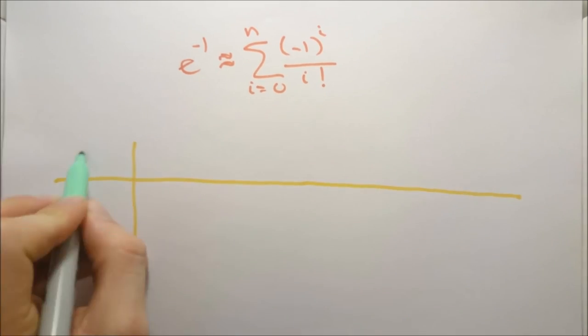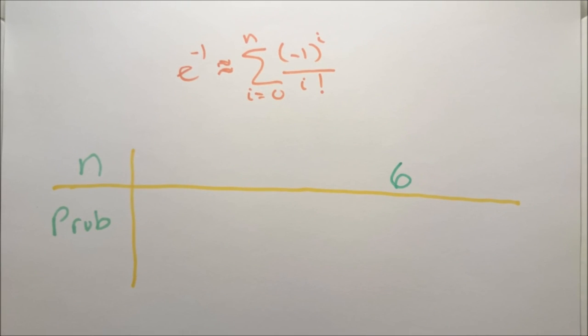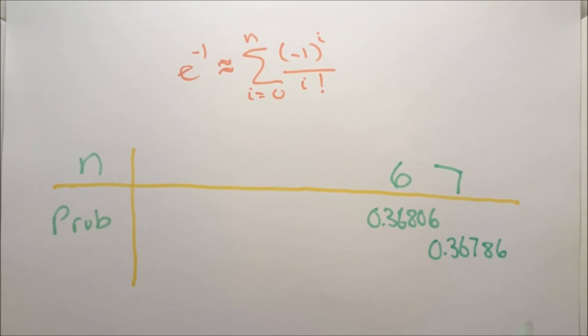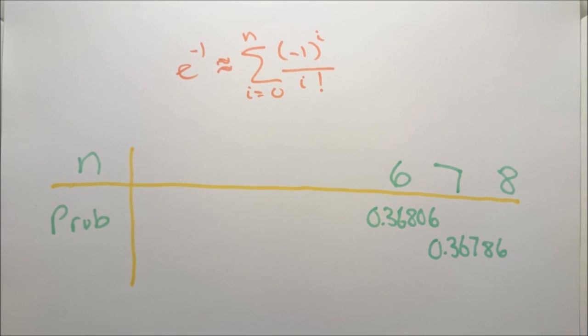Now when we plug in n as 6 as given in our original problem this sum is approximately equal to 0.36806. We can see that this is already very close to 1 over e. Now say we plug in 7 we get 0.36786. Plug in 8 we get 0.36788.